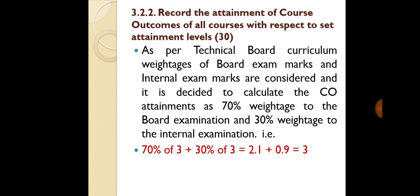To record the attainment of course outcomes of all courses with respect to the set attainment level: as per the technical board curriculum, weightages of board exam marks and internal exam marks are considered. It is decided to calculate the CO attainment as 70% weightage to the board examination and 30% weightage to internal examination — that is, 70% of 3 is 2.1 and 30% of 3 is 0.9, so 2.1 plus 0.9 equals 3.